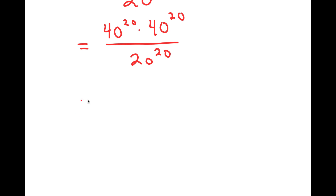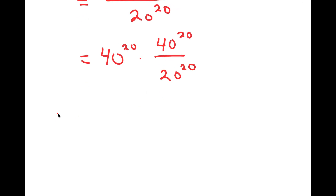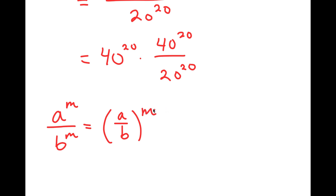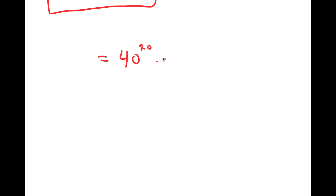Now from here, I can rearrange this to be 40 to the power of 20 times 40 to the power of 20 over 20 to the power of 20. And if I have something in the form a to the power of m over b to the power of m, this is equal to a over b to the power of m. So in this case, I have 40 to the power of 20 over 20 to the power of 20, and that's going to turn into 40 over 20 to the power of 20.